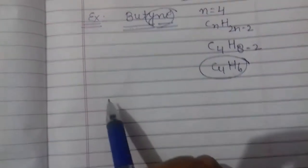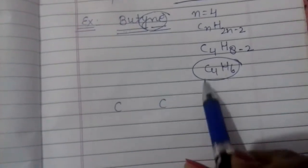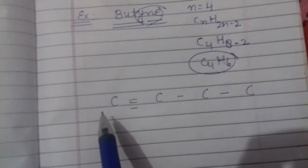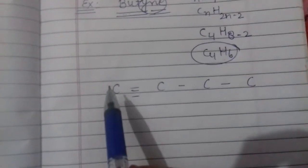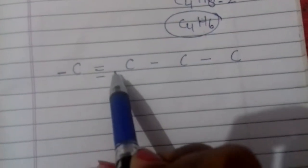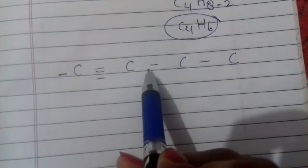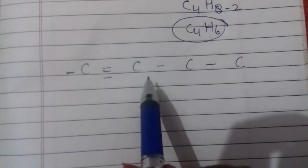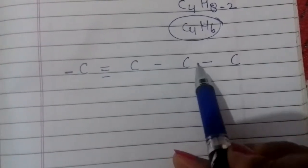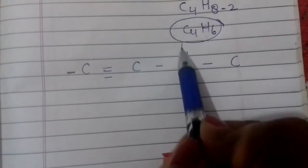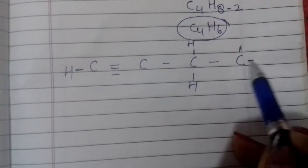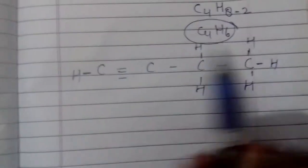अब इसकी bond structure बना लेते हैं। Bond के लिए 4 carbon लेने होंगे, और एक के बीच में हम triple bond लगा देते हैं, बाकी के बीच में single bond। Carbon की चारों तरफ 4 bond करने हैं: पहले carbon में 3 already हैं तो 1 और लगेगा, hydrogen लगा देंगे। दूसरे carbon में 3 bond है और 1 bond है - total 4 bond complete हैं, extra लगाने की जरूरत नहीं। तीसरे carbon की 2 valency complete है, तो 2 bond और लगेंगे hydrogen के। चौथे carbon की 1 valency complete है, तो 3 valency और complete करानी है, वो hydrogen कर देगा।